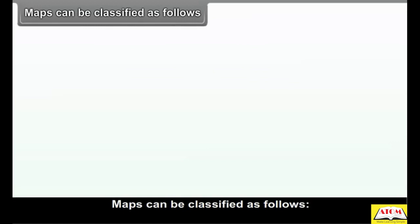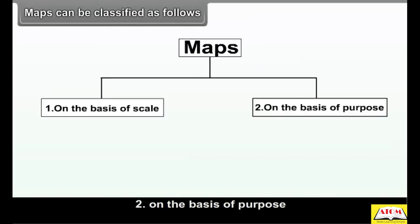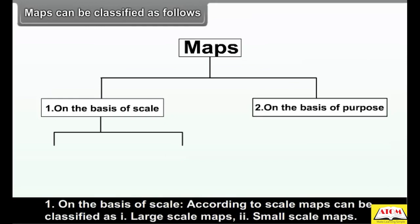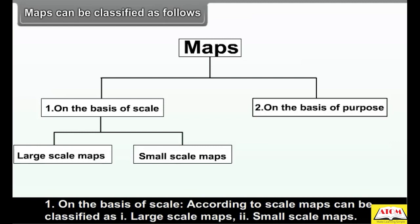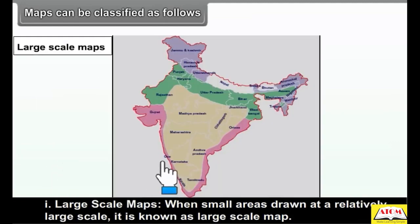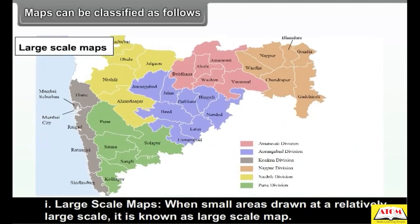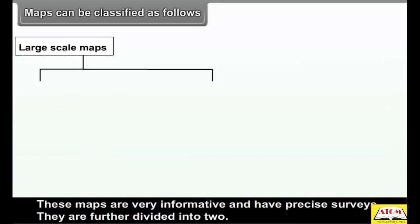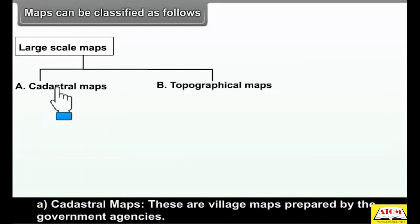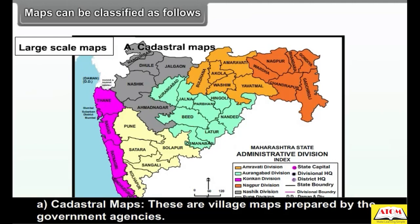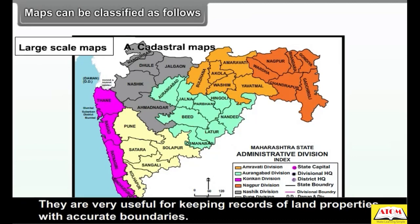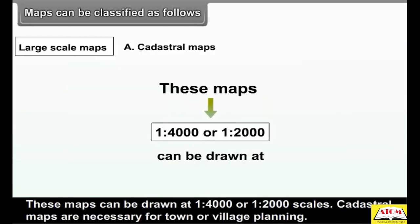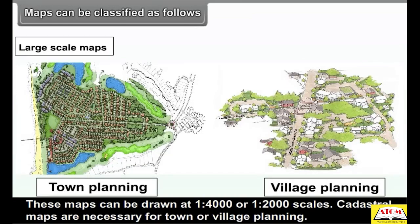Maps can be classified on the basis of scale and on the basis of purpose. According to scale, maps can be classified as large scale maps and small scale maps. Large scale maps: when small areas are drawn at a relatively large scale, it is known as a large scale map. These maps are very informative and have precise surveys. They are further divided into two types. A. Cadastral maps: these are village maps prepared by government agencies, very useful for keeping records of land properties with accurate boundaries. These maps can be drawn at 1:4000 or 1:2000 scales and are necessary for town or village planning.